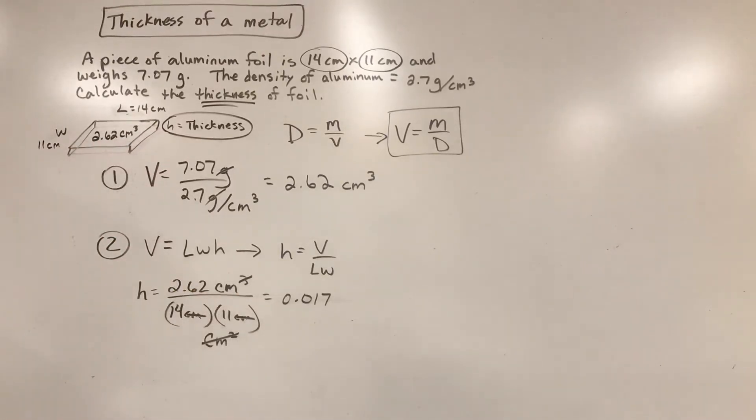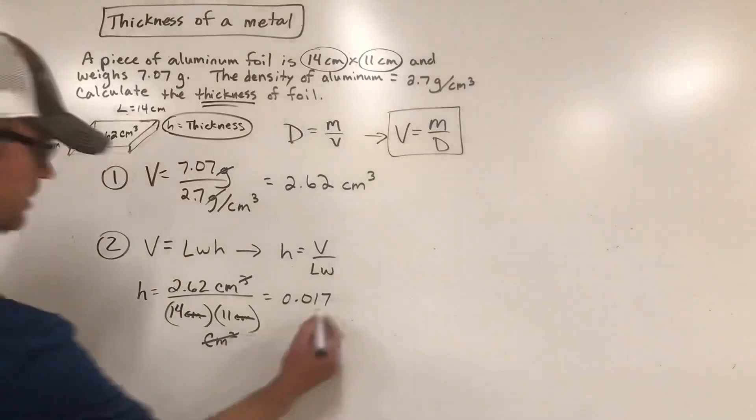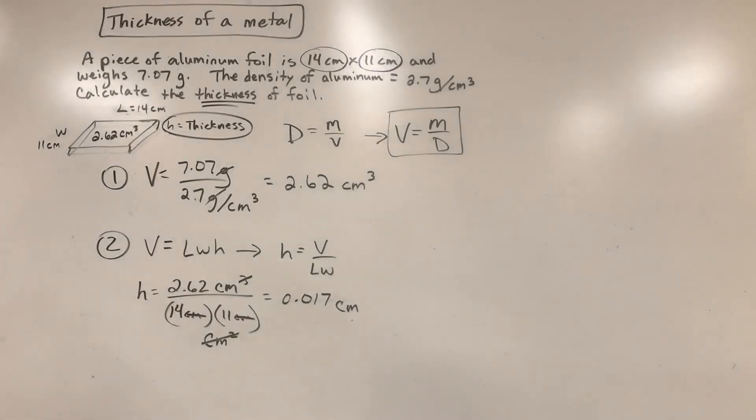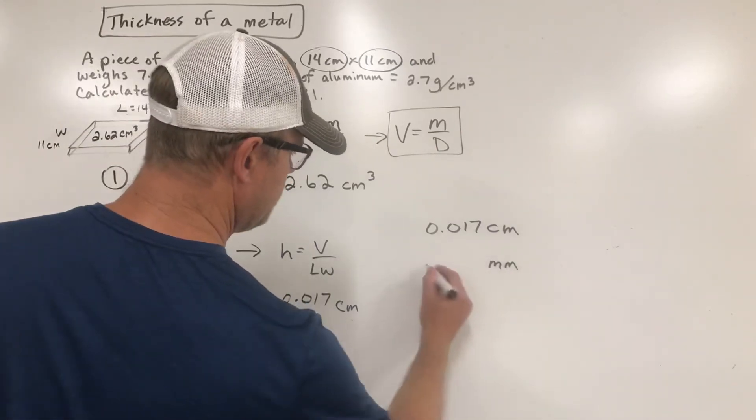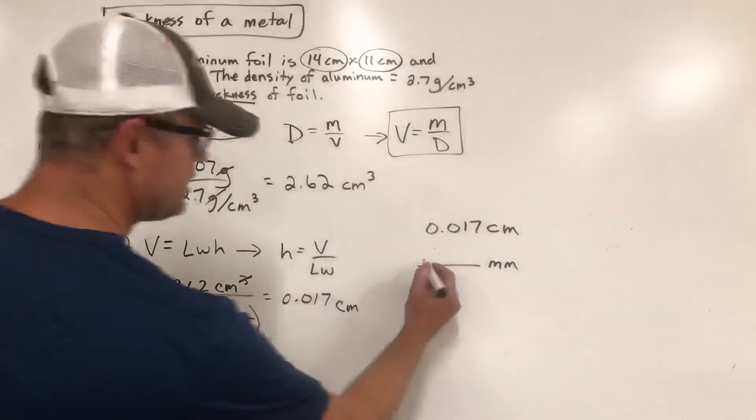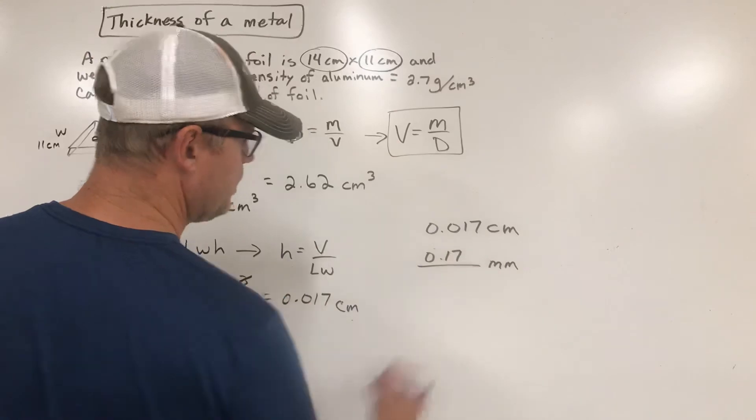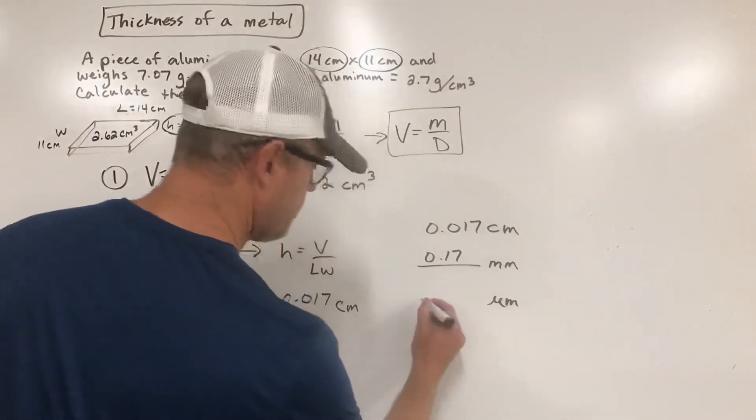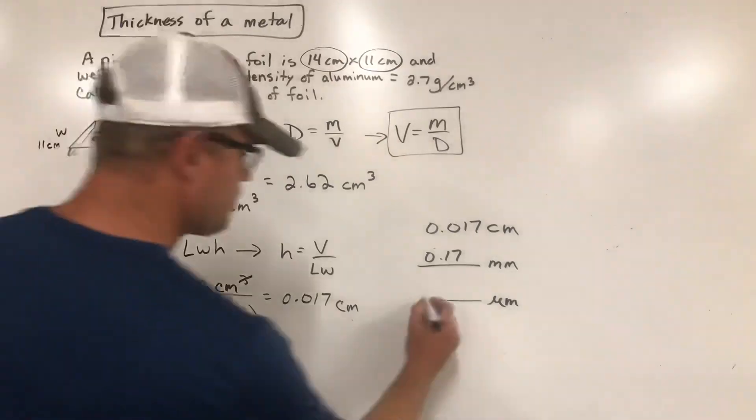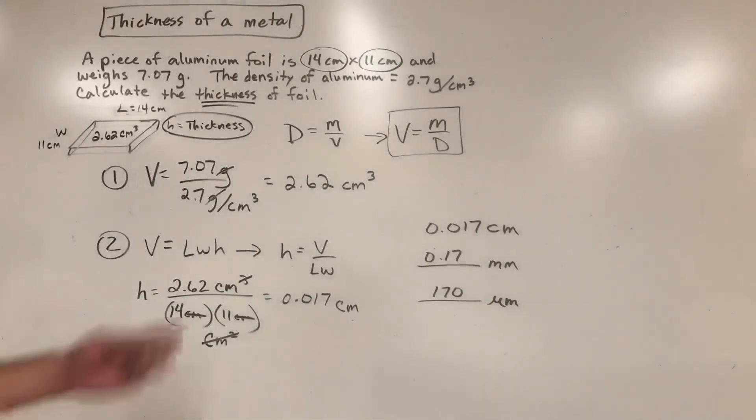It's a tiny number, but that makes sense. You guys have all seen foil, it's really, really, really thin. This is an amount in centimeters, and it's really common in a lot of these problems for them to ask you to put them into something a little bit more reasonable. So 0.017 centimeters, that might be better reported in millimeters. To change it to millimeters, all I do is multiply it by 10 or move the decimal one spot, and I get 0.17 millimeters. Another way you might report that is in micrometers. I would move the decimal three more spots, and this would be 170 micrometers. All three of those basically mean the same thing. They're just on different scales.